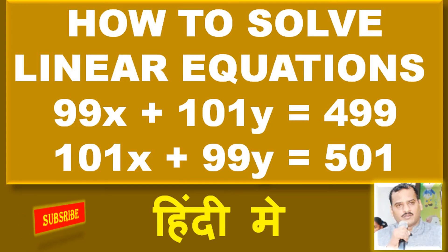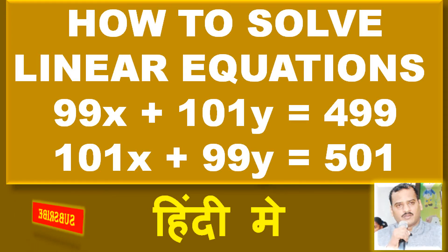Hello friends. Now we have to learn how to solve linear equations: 99x + 101y = 499 and 101x + 99y = 501.